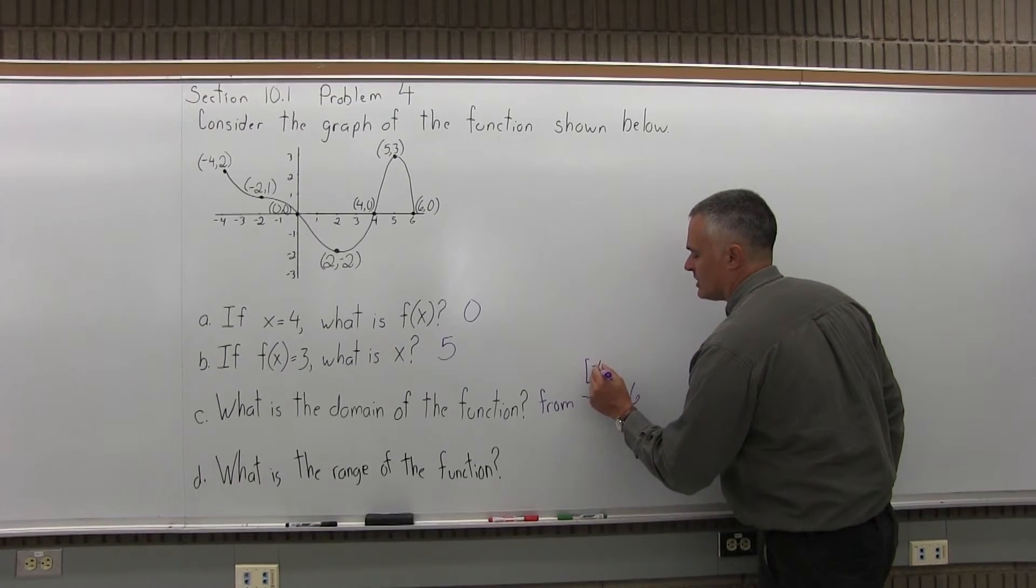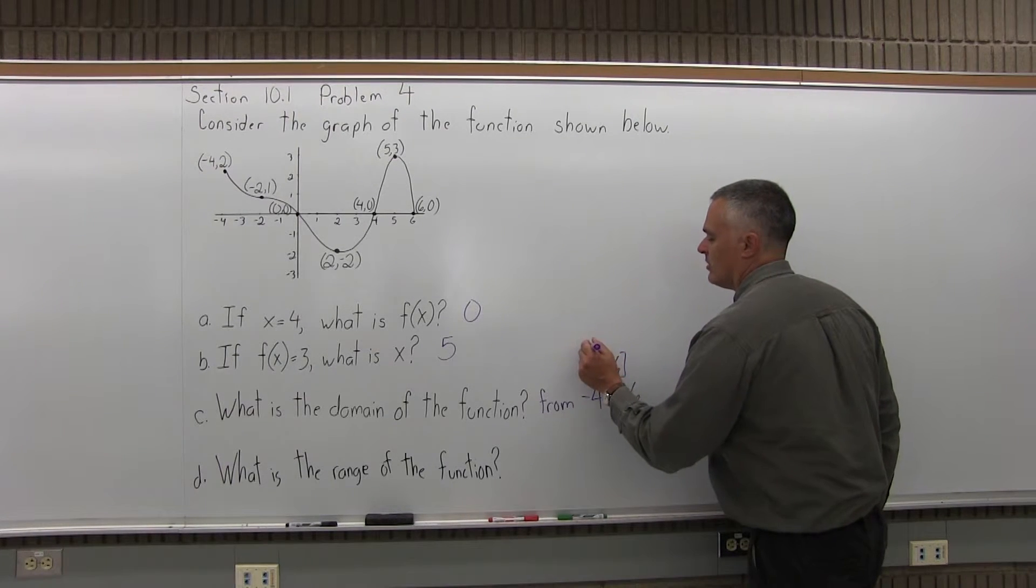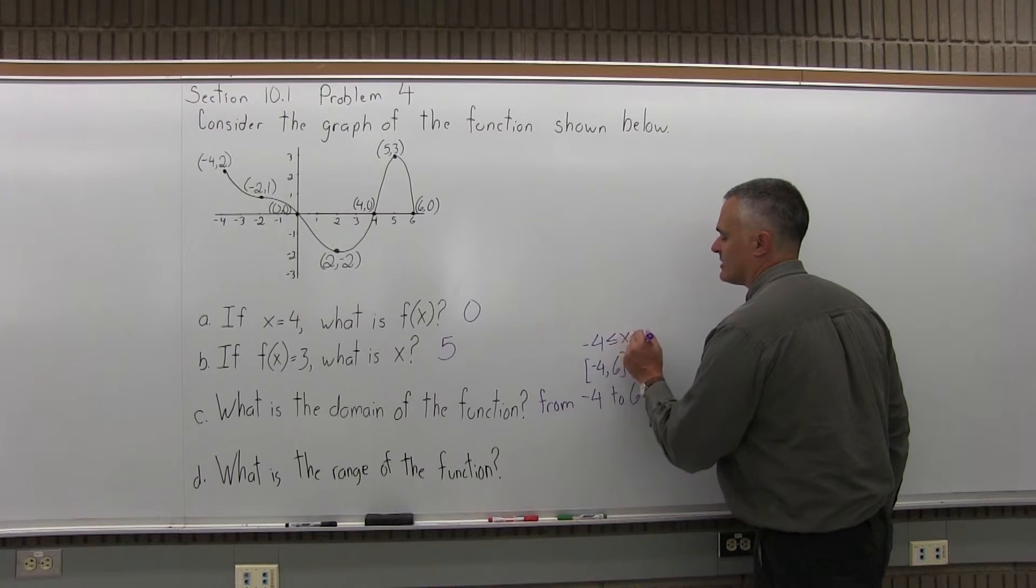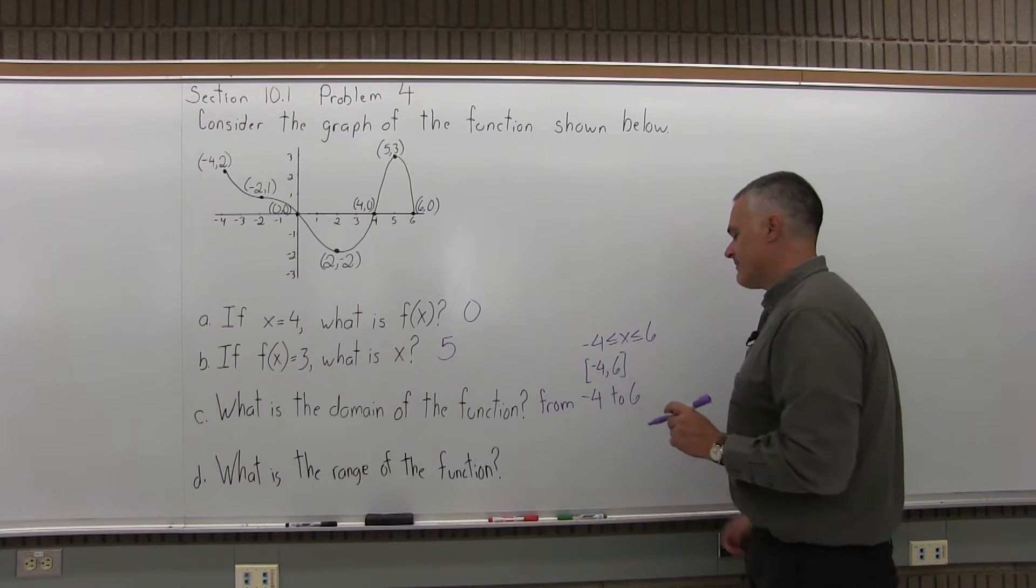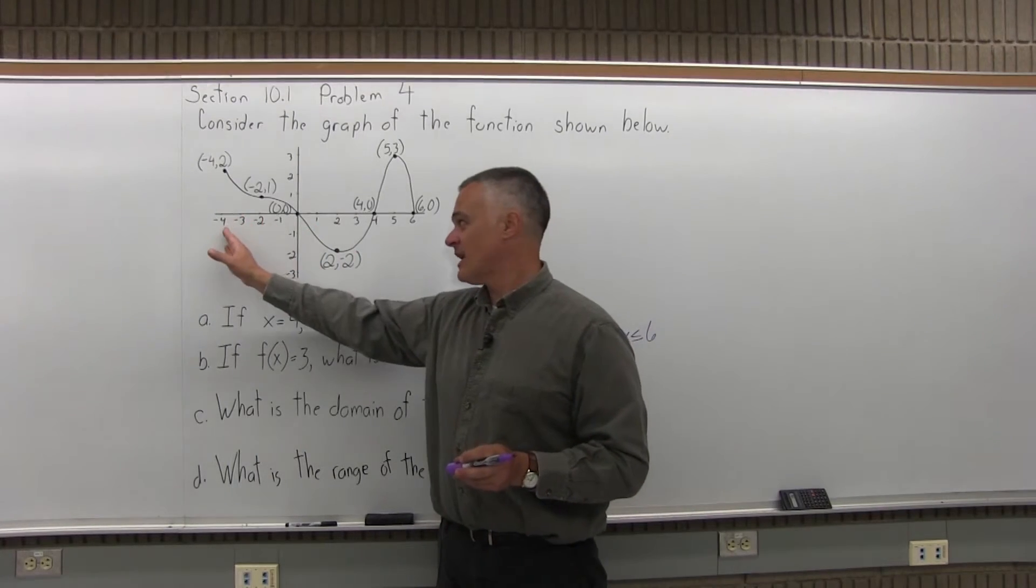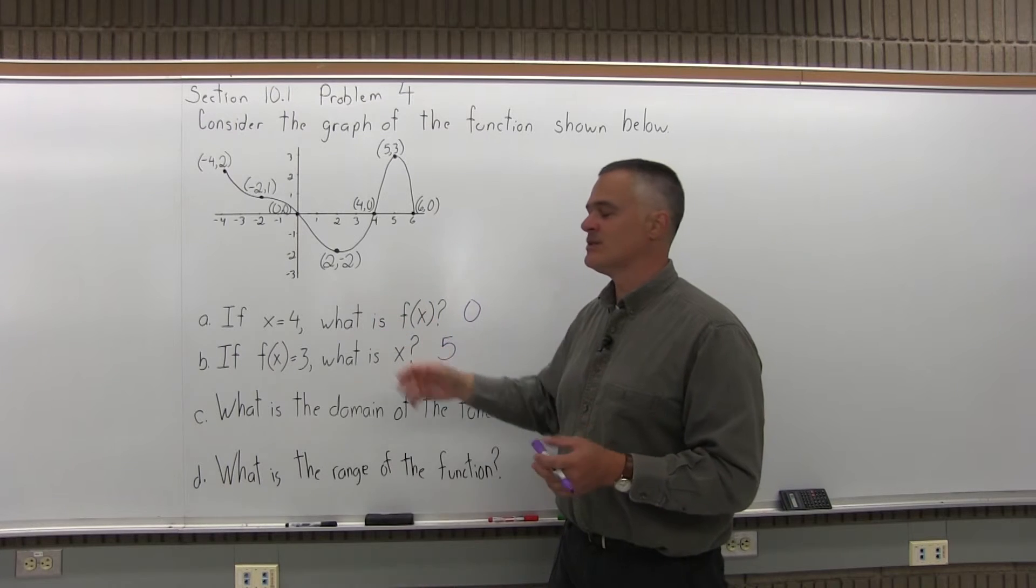You can use the bracket notation, negative 4, comma, positive 6, a bracket on both. You could have negative 4 is less than or equal to x is less than or equal to 6. However you get the point across that it covers x values from an x value of negative 4 all the way up to an x value of positive 6, that's the domain.